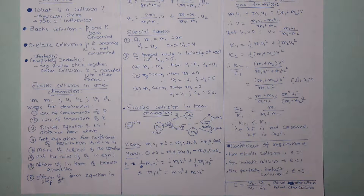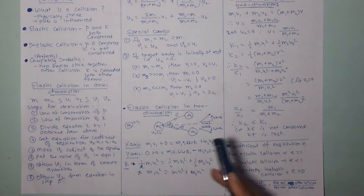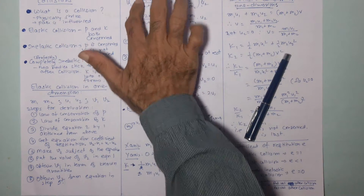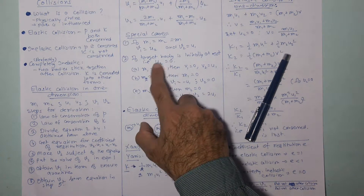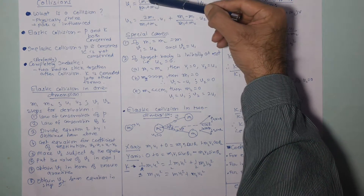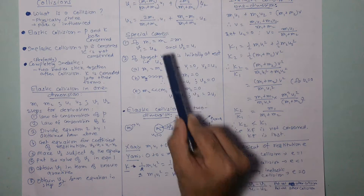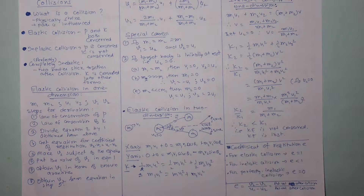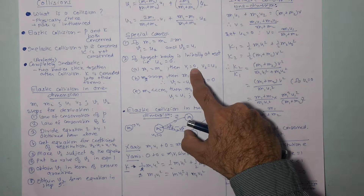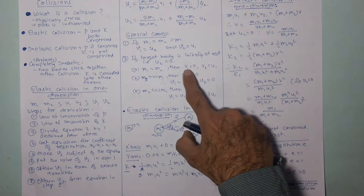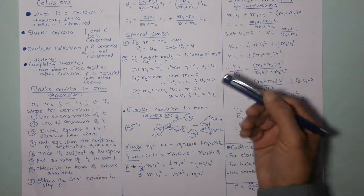Special case 2: the target body is initially at rest, so U2 = 0. Sub-case A: if M1 = M2, then V1 = 0 and V2 = U1. The first object comes to rest and the second object moves with the initial velocity of the first. This is what happens when masses are equal and the target body is at rest.